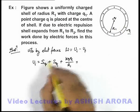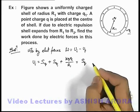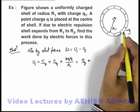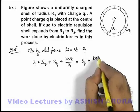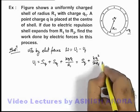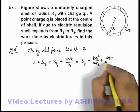Self energy of a point charge we cannot exactly define, we just write it as Sq. The self energy of the charge on the shell we can write as kq₁² by 2R₁, plus the interaction energy we can write as kqq₁ by R₁.